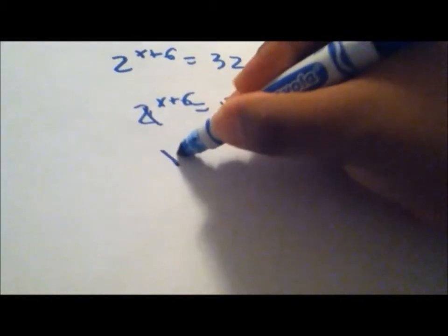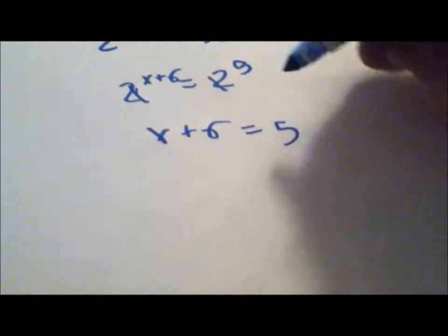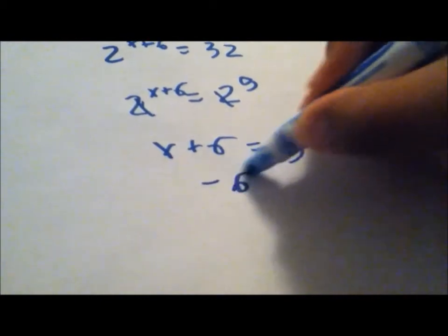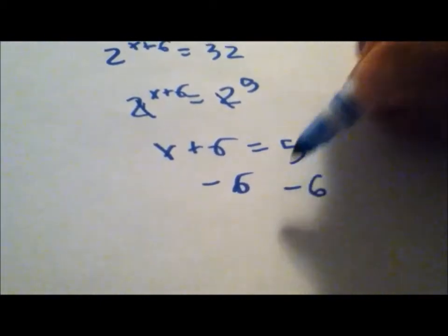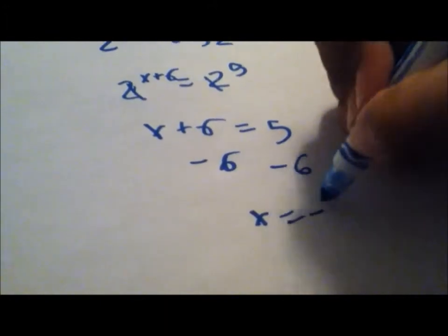Then we're left off with x plus 6 equals 5. Once you do your simple algebra, we find out that x plus 6 equals 5 will lead to x equals negative 1.